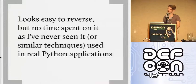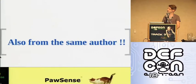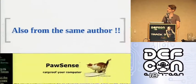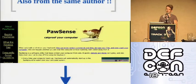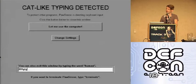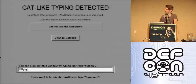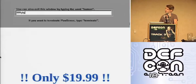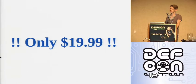When I was looking at the vendor who sold this Python obfuscator, I found a gem — he also sells PawSense, a way to cat-proof your computer that detects when cat typing has occurred. So if you have cat-computer problems, this is your man — and it's only $19.99.